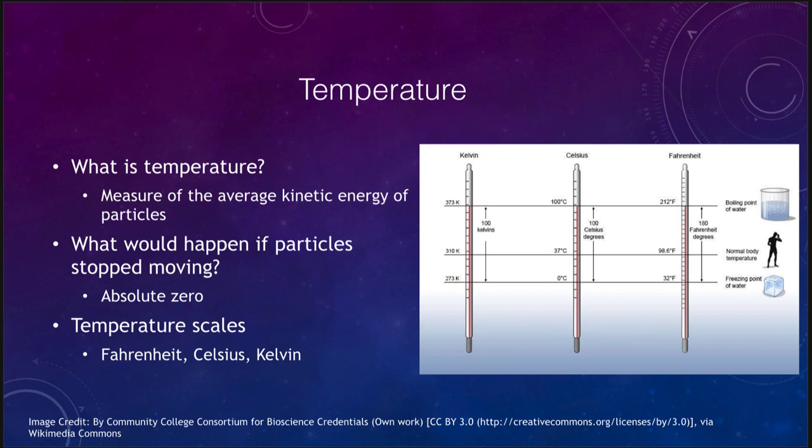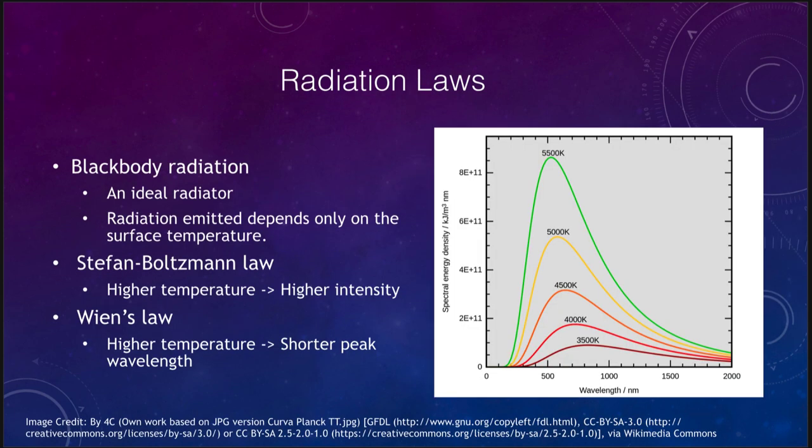So our last topic for this section we want to look at is the radiation laws. Now radiation laws, and there are two of them that we'll look at, are based on the idea of blackbody radiation. And blackbody radiation is an ideal radiator, and that means that it absorbs all of the light incident upon it. That's how it gets its name. A black object would be a much better black body than a white object because the black body is not reflecting, reflecting very little light. So an ideal radiator, it would absorb everything on it and it would give off light based only upon its temperature. So stars are an example of this. They are a pretty good example of a black body radiator, and the type and amount of radiation that they emit depends only on their surface temperatures.